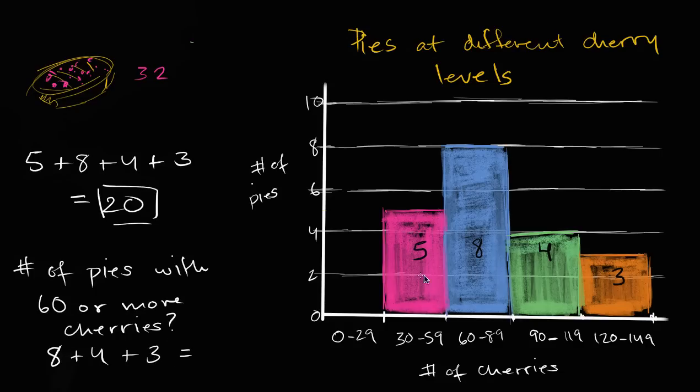So it is going to be essentially everything but this first bucket. All the pies except for these five pies have 60 or more cherries. So it should be five less than 20. And so let's see, eight plus four is 12, plus three is 15, which is five less than 20.